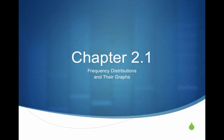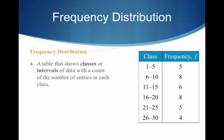Let's get into some descriptive statistics. Let's begin chapter 2 by talking about frequency distributions and how we're going to graph these things. A frequency distribution is a table that shows classes or intervals of data with a count or tally of the number of entries in each class.